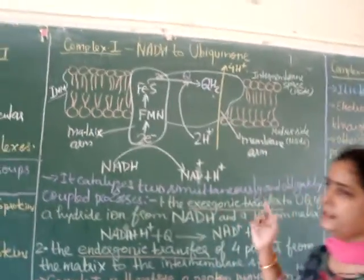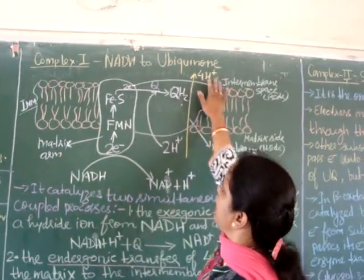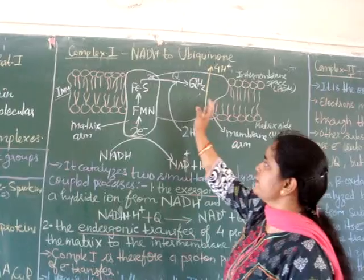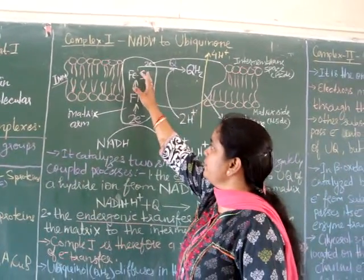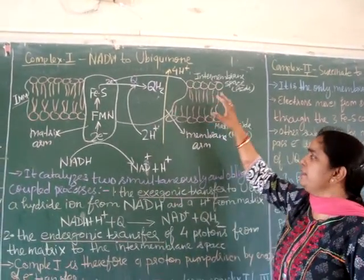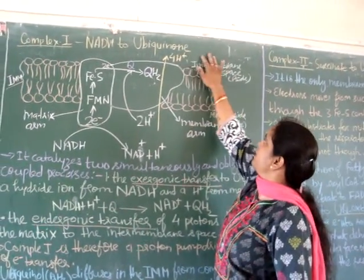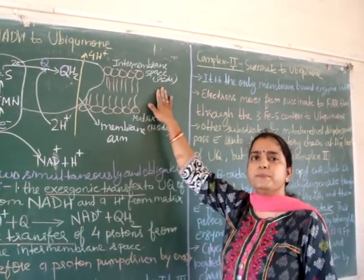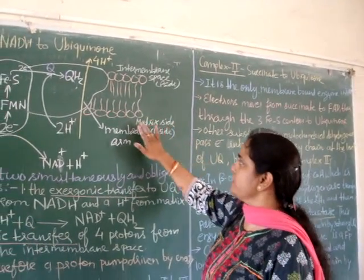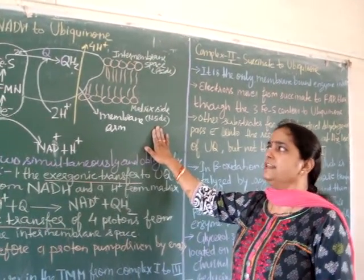Now we will see the transfer of electrons to Complex I, that is, from NADH to ubiquinone (Q). The shape of Complex I is L-shaped: one arm is present towards the matrix side and the other arm is embedded in the membrane, known as the membrane arm. The inter-membrane space side is also known as the P side or positive side, and the matrix side is the N side or negative side.